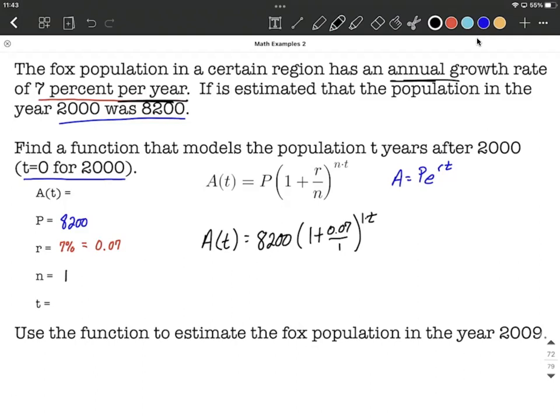We're not plugging in 0 for t because we're trying to create a model that we can answer whatever year we're asked about how many foxes we're going to have in the population.